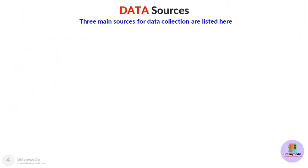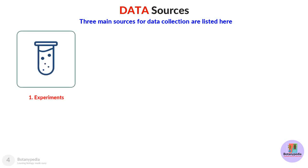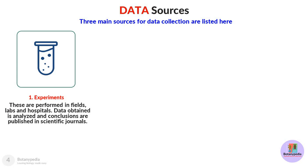What are the various types of data sources? There are basically three ways by which we can get data. One very important primary way is from experiments. These experiments can be performed in fields, labs, or hospitals. The data obtained from these places is analyzed and conclusions are published in scientific journals.